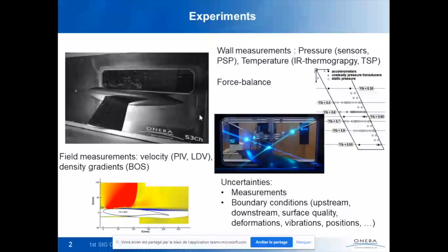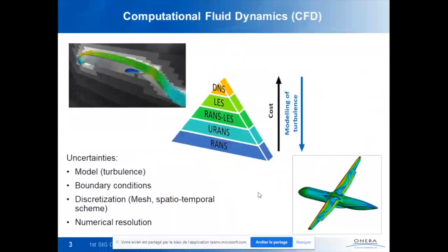Uncertainties come from both experiments and CFD. In experiments at ONERA we have wind tunnels, models, and various measurement techniques such as force balances and field measurements. There are many sources of uncertainty: measurement uncertainty, boundary condition issues, upstream flow quality in the wind tunnel, surface quality of the model, deformation, vibrations, and position errors.